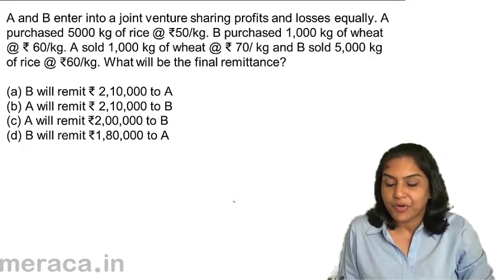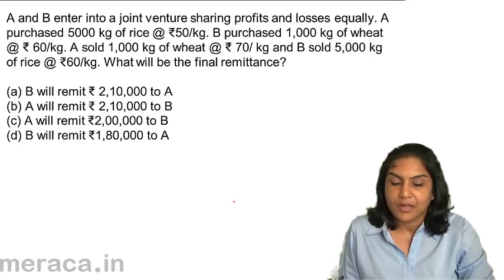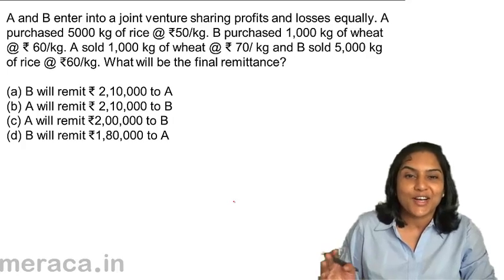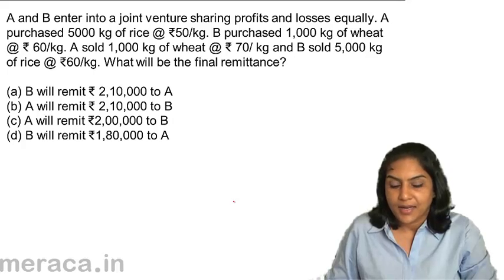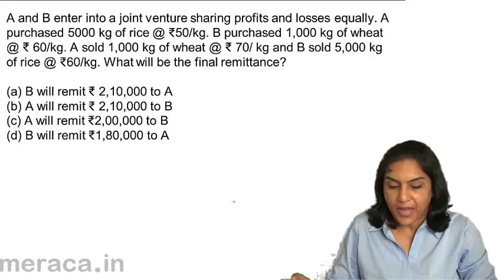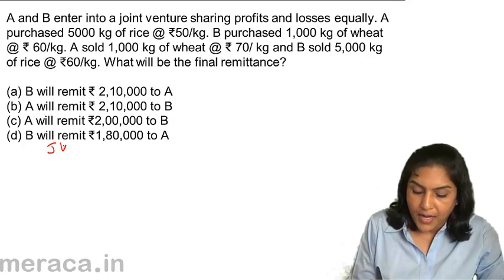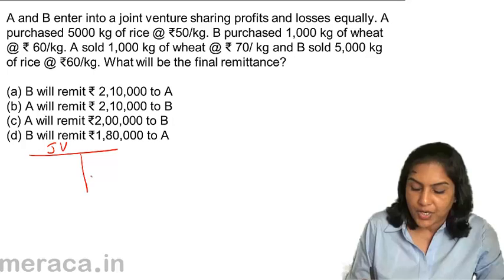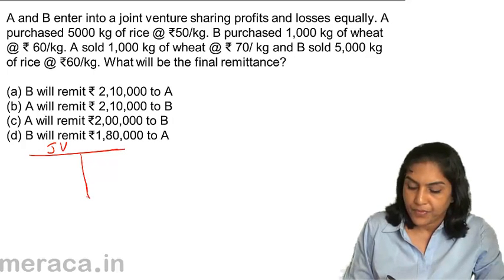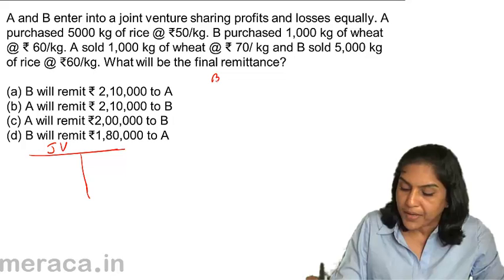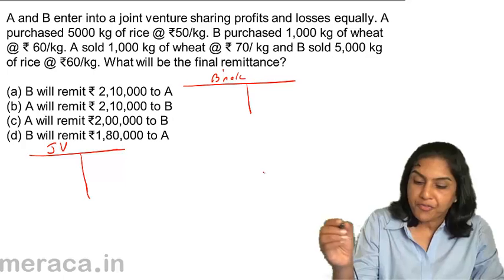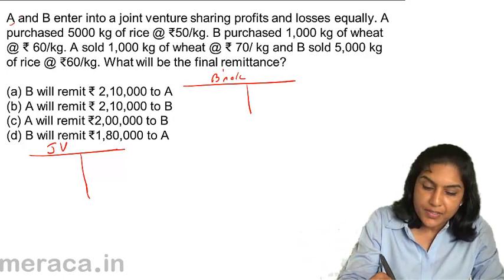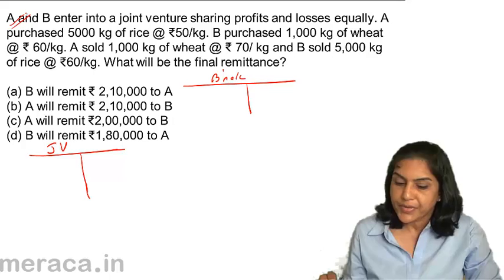The final remittance is found by preparing either B's account in the books of A, or A's account in the books of B. Let us prepare accounts in the books of A. In the books of A, we will prepare a joint venture account and also B's account. So what would the joint venture account look like?